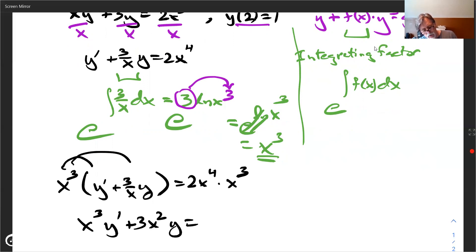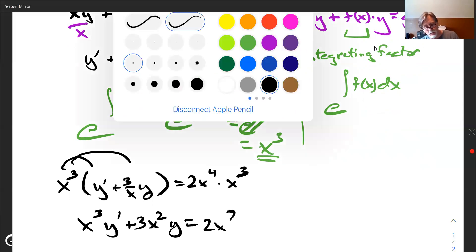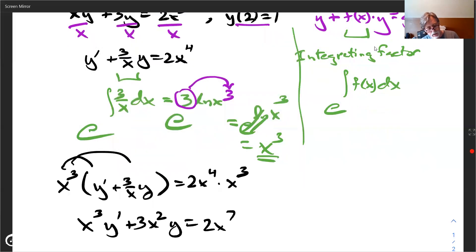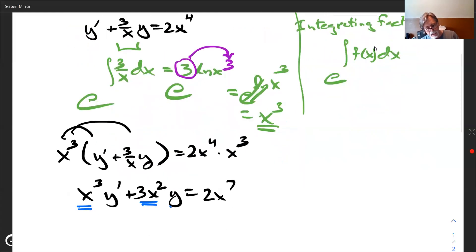And on the other side, we have 2 x to the seventh. But what I want to draw your attention to is the following. This is a product rule. I've got x cubed and then its derivative 3 x squared. I've got y and its derivative y prime. So it's really looking like f times g and someone derived it and you get f prime g plus f g prime is exactly right.